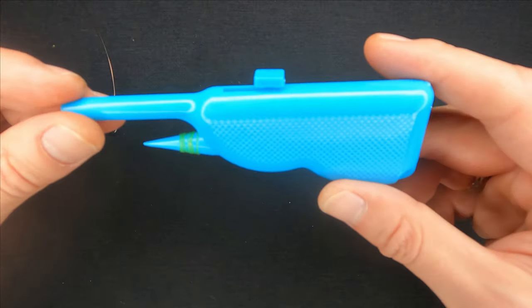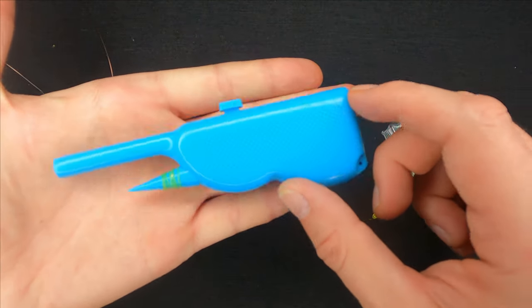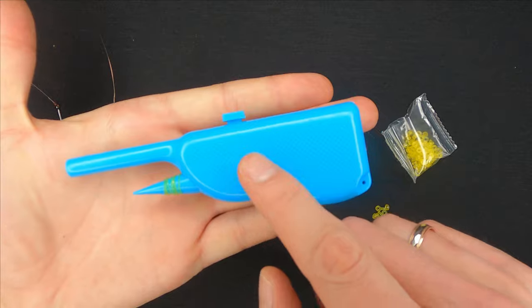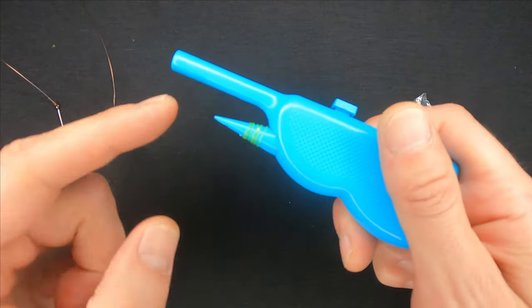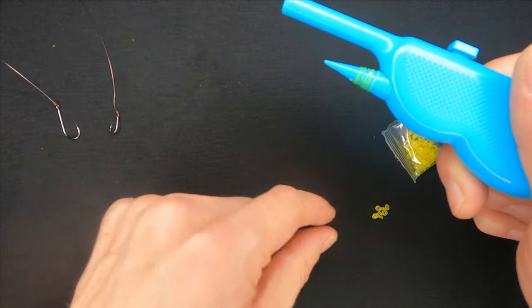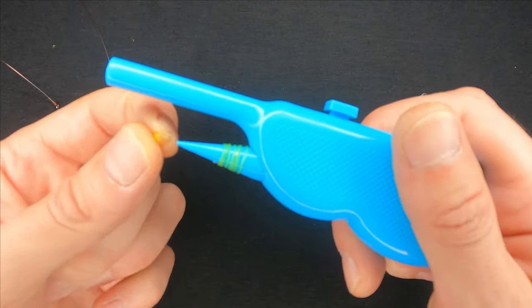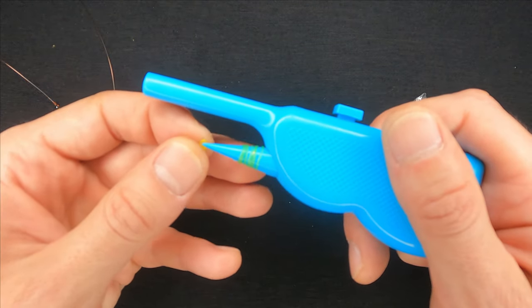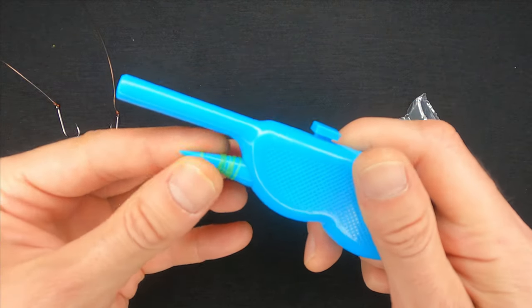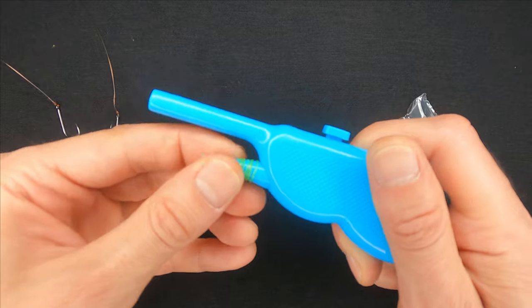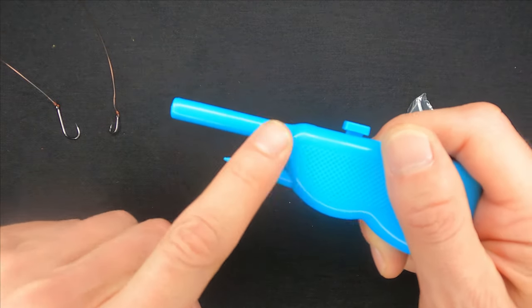This tool is pretty small as you can see and can fit in any tackle box of yours. It has this bottom part over here where we can put those rubbers on in order to stretch them out so that it would be easier for us to put them onto this tube here.